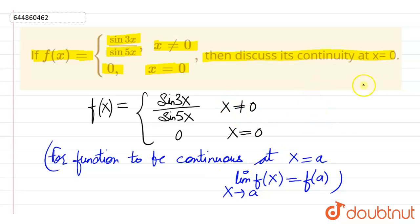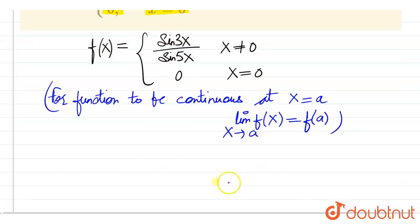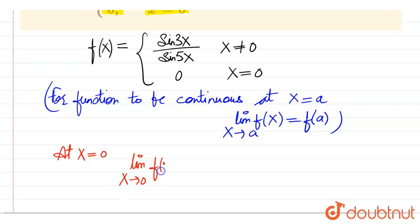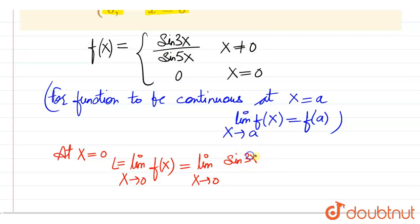Here we have to check continuity at x equal to 0. So at x equal to 0, the limiting value as x approaches 0 of f of x — let's call this L — so this is limit x approaches to 0 of f of x. The value of the function when x is not equal to 0 is sin 3x divided by sin 5x. When we put x equal to 0, this becomes sin 0 by sin 0, which is 0 by 0 form.